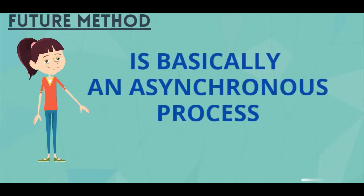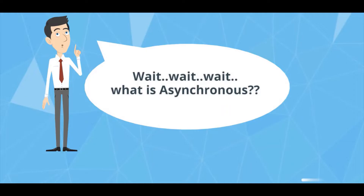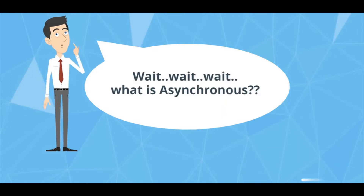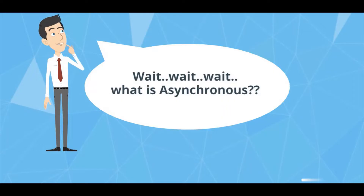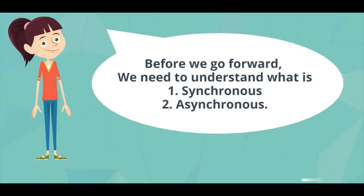First things first, a future method is basically an asynchronous process. What is asynchronous? For people who don't know — there's a character named Cuboy who always interrupts me in these kinds of videos and will ask questions like this. As he has asked, before we go forward we need to understand what is synchronous and asynchronous.